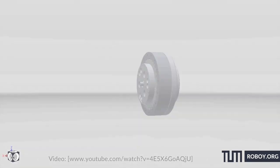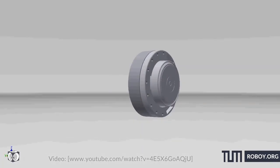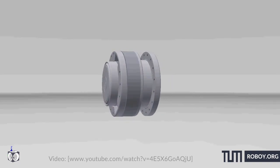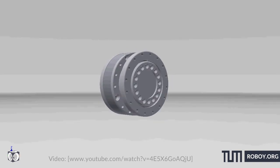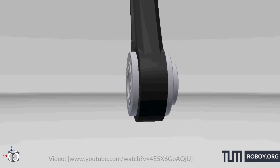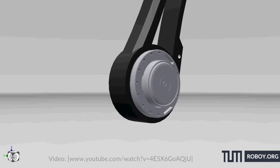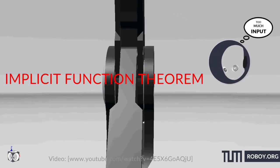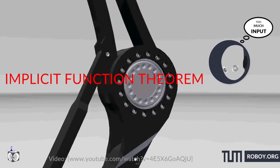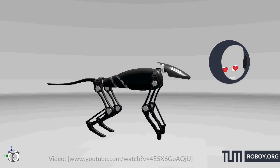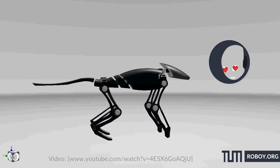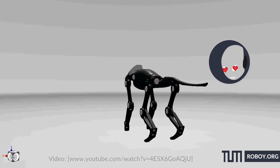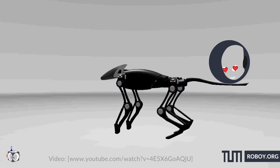Their framework provides an iterative editing method where the user can provide change directions at any time during the optimization process. The key element they use to solve this is the implicit function theorem — a tool for converting an implicitly defined relationship between two sets of variables into an explicit function.